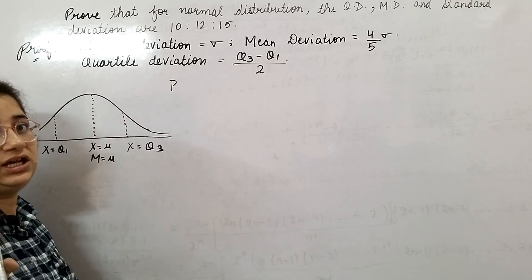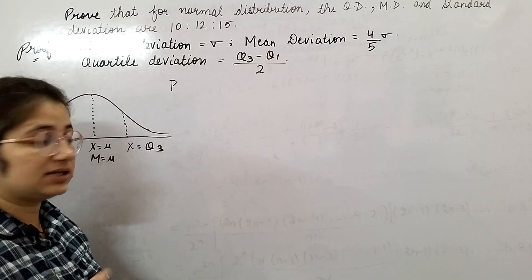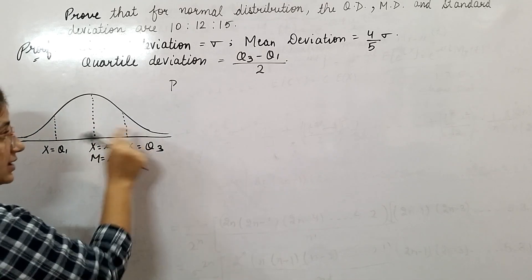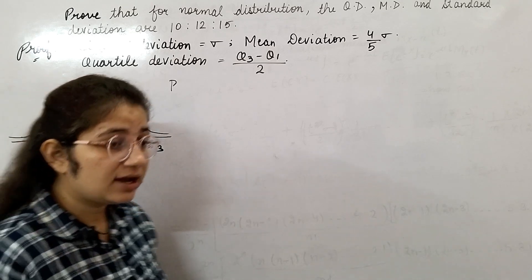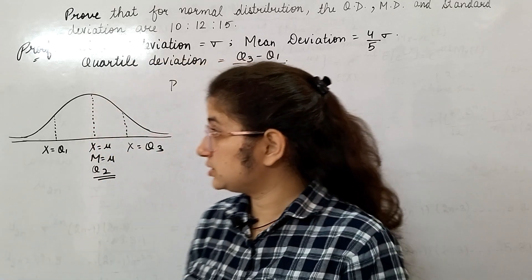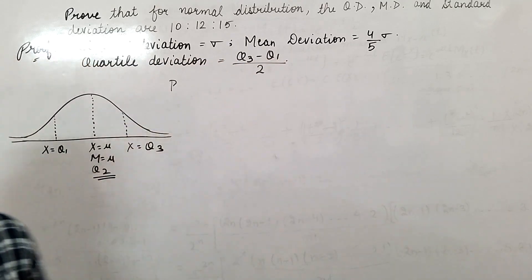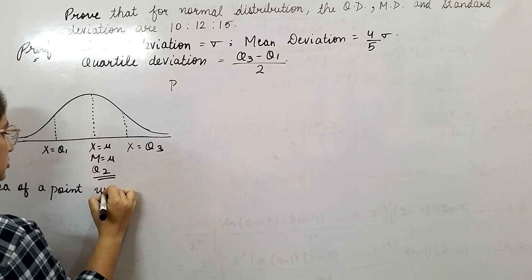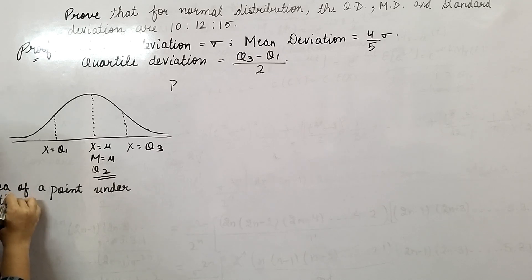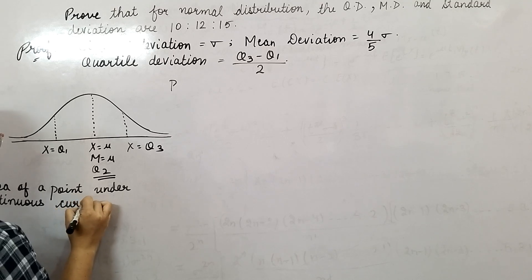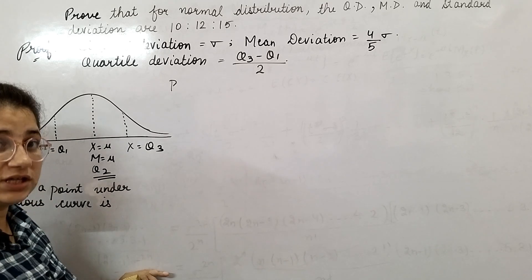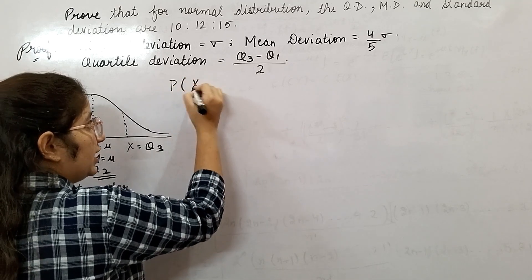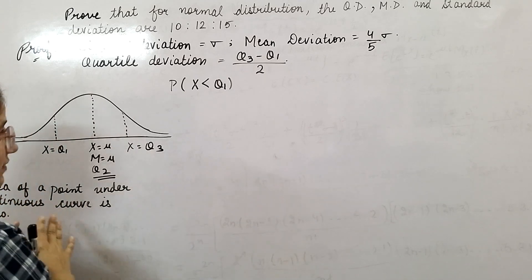Now, probability—you are dividing your data into 4 equal parts. That means in percentage, this is 25%, 25%, 25%, and 25%, right? But normal distribution is a continuous distribution, and I want to use one result: that the area of a point under a continuous curve is zero. Firstly, let me explain why I have written this.